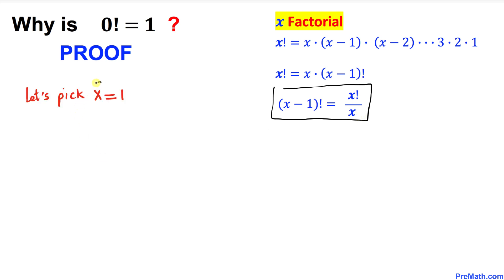Now let's go ahead and pick x equal to 1 and put it in this equation. So once we plug it in x equal to 1, that's going to become 1 minus 1 factorial equals to this is going to be 1 factorial divided by 1.